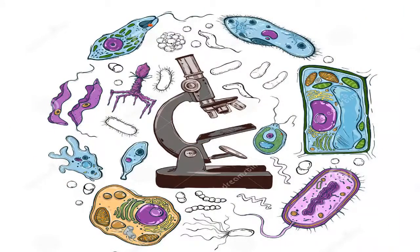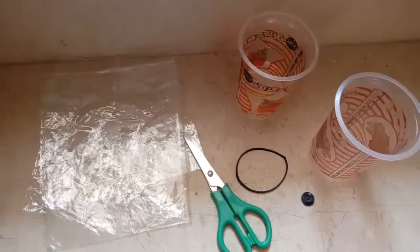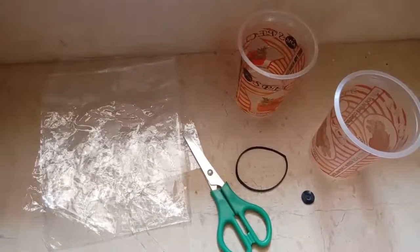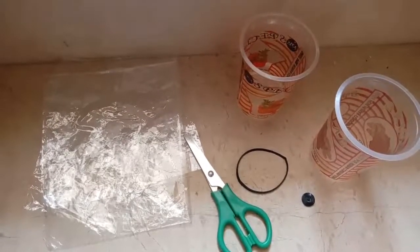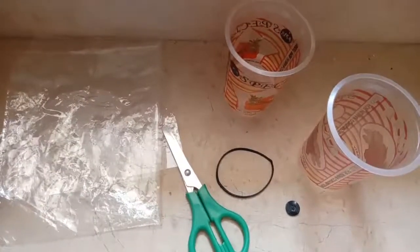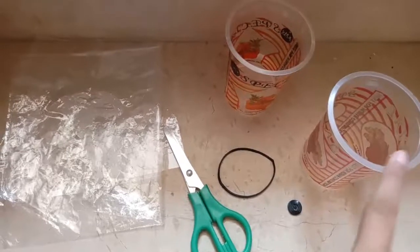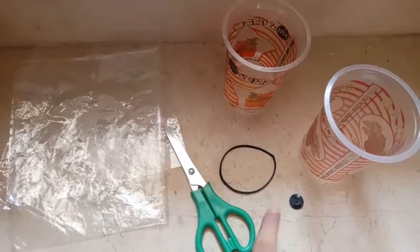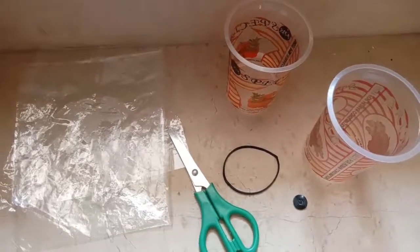In our previous class, we discussed microscopes and microorganisms. Now, my dear students, we will do a very interesting activity regarding a microscope — how we can make a simple microscope by ourselves. For this purpose we will require some materials: a plastic cup, a thin plastic sheet, a rubber band, scissors, and a tiny object.